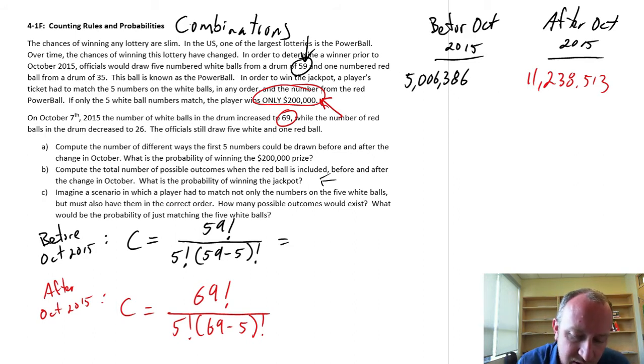Part B, compute the total number of possible outcomes when the red ball is included, before and after the change. So if we include the red ball, now all we have to do, here we have that red ball before October 2015, there were 35 possible values of the red ball.